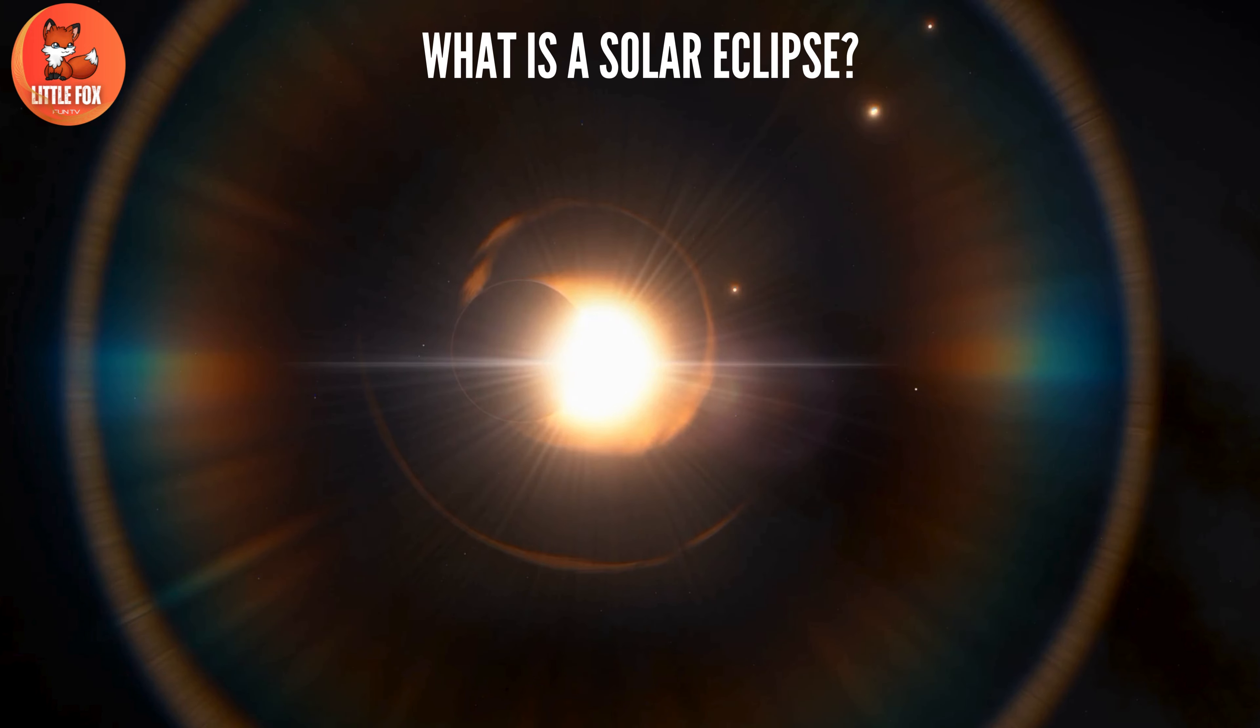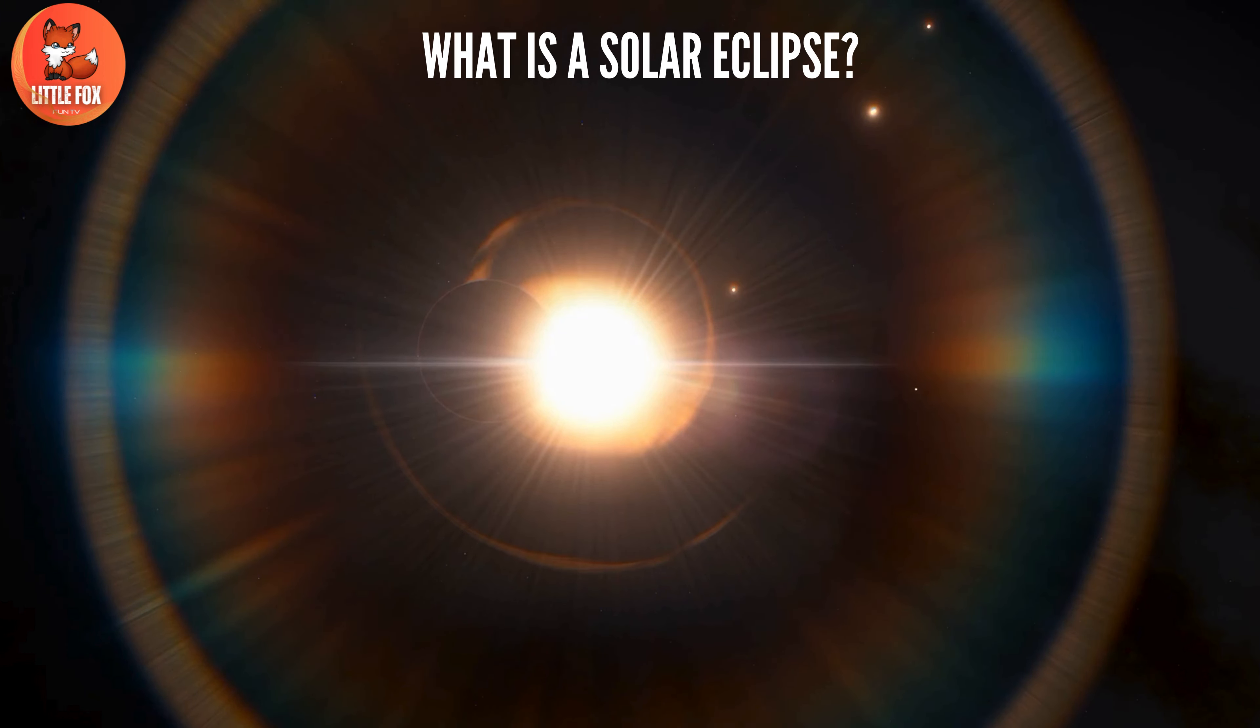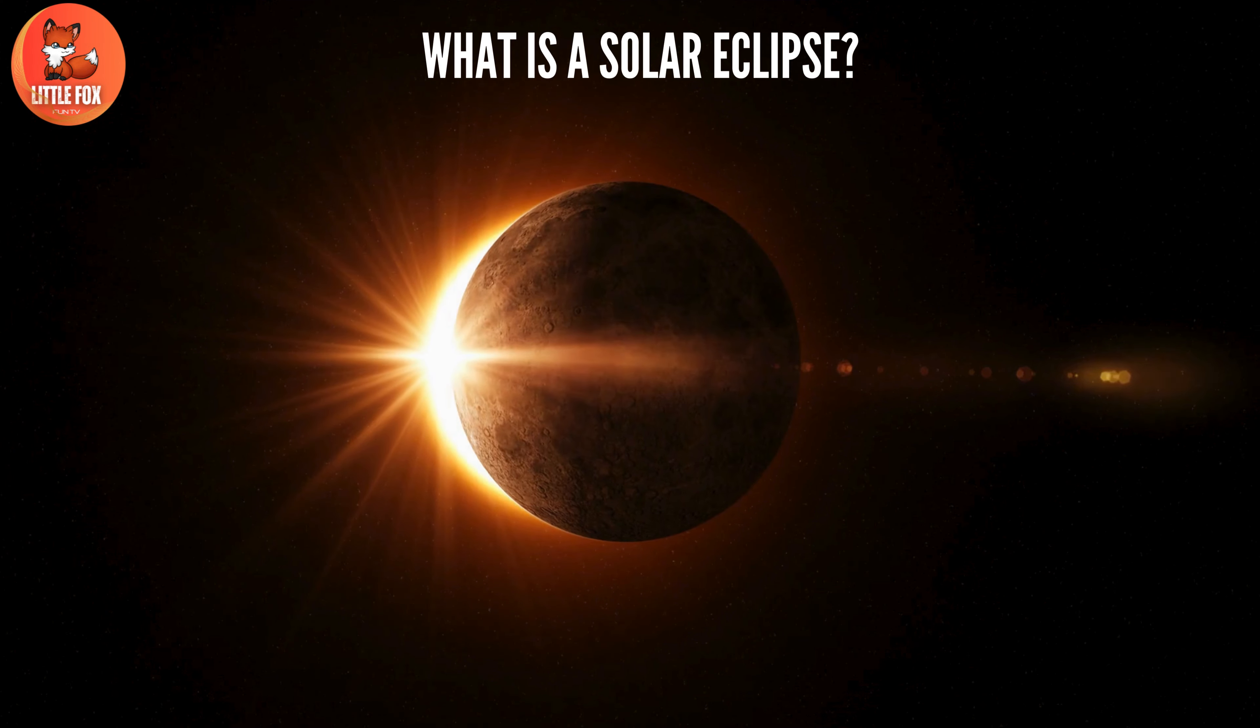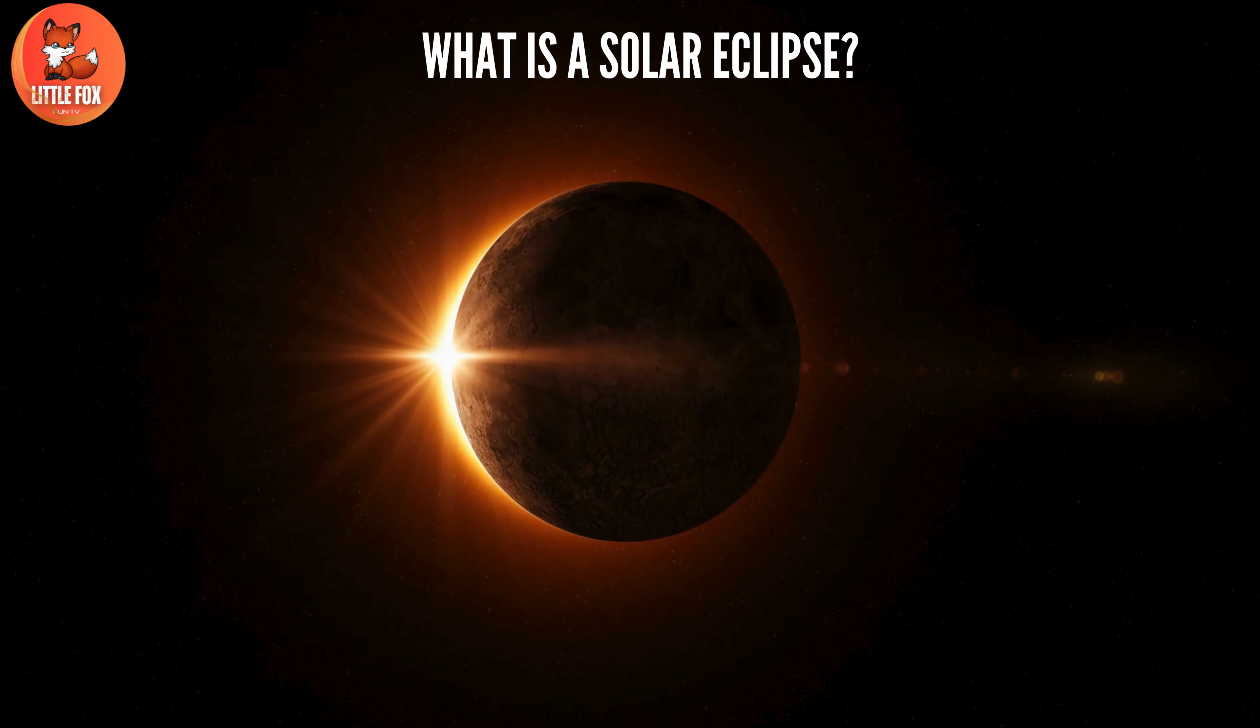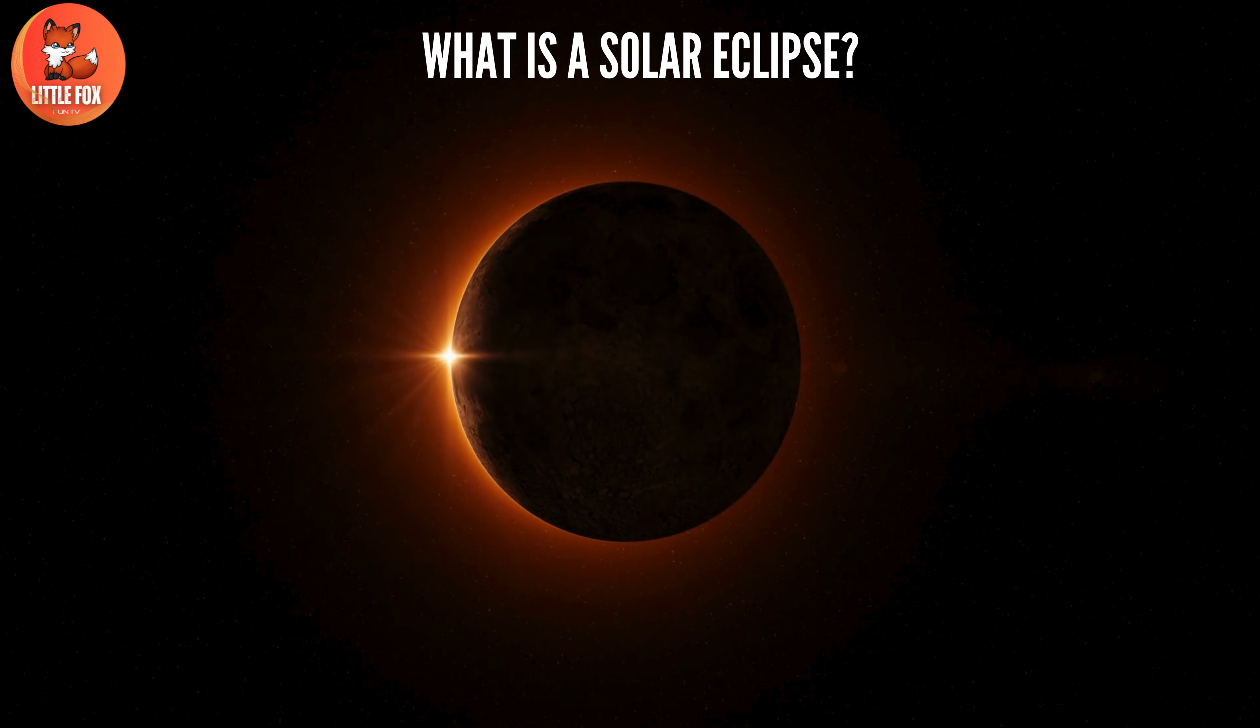Now, here's the real kicker. If you want to experience the ultimate darkness party during an eclipse, you've got to be smack dab in the path of totality. That's where the moon throws the ultimate shade and turns day into night for a few magical minutes. It's like having a sleepover with the stars.